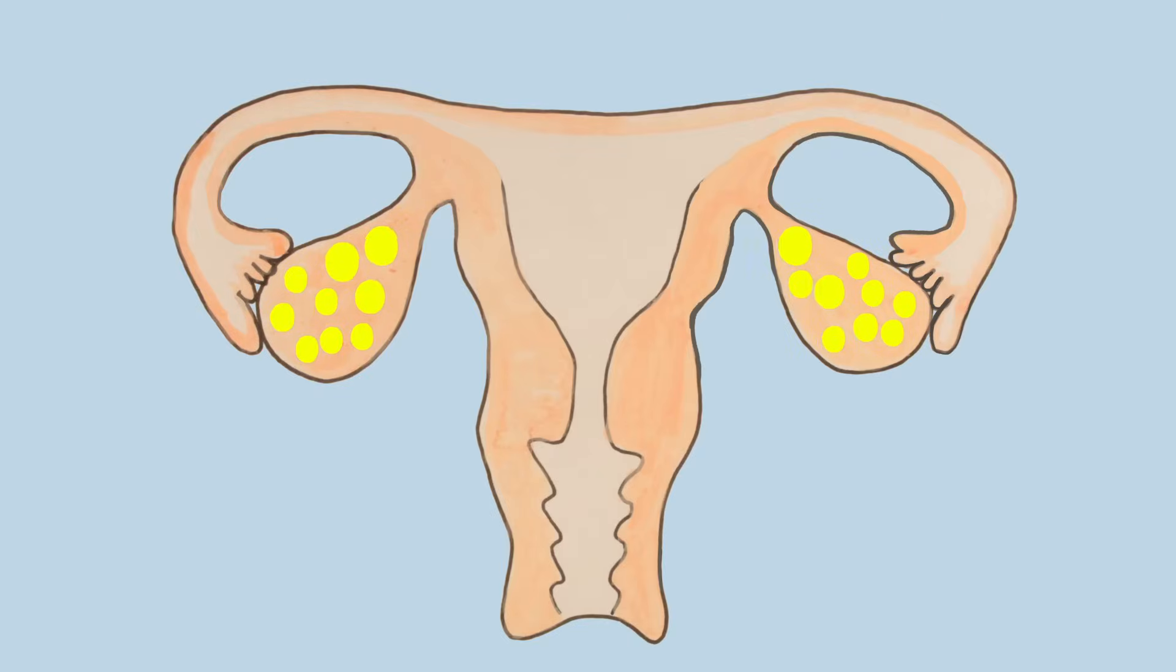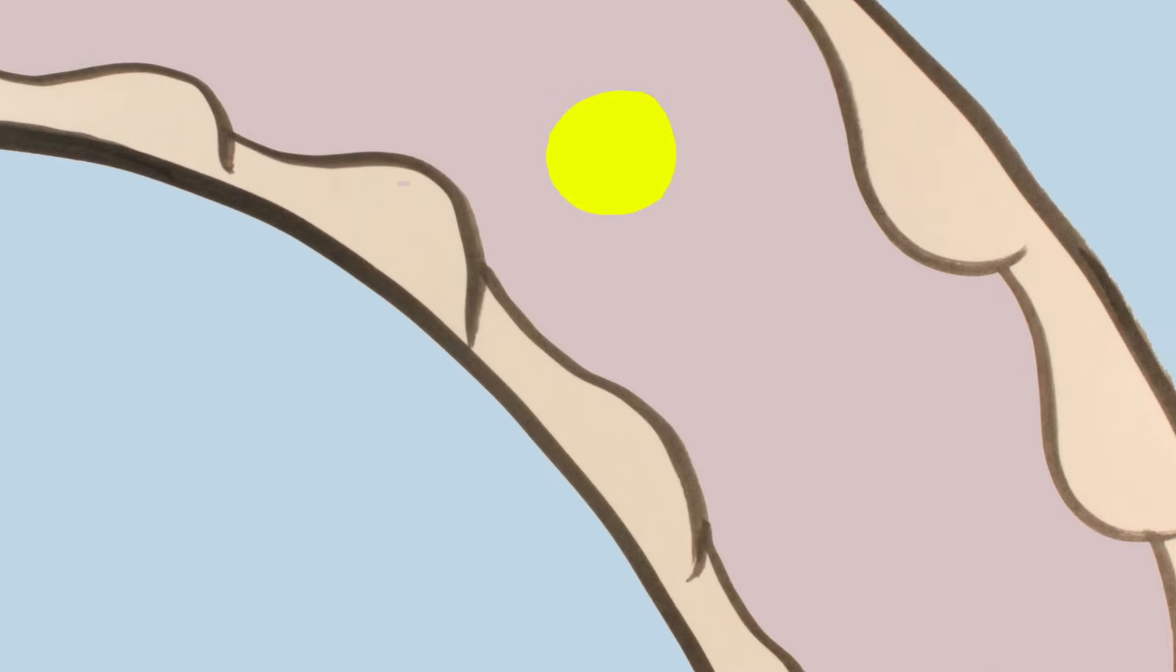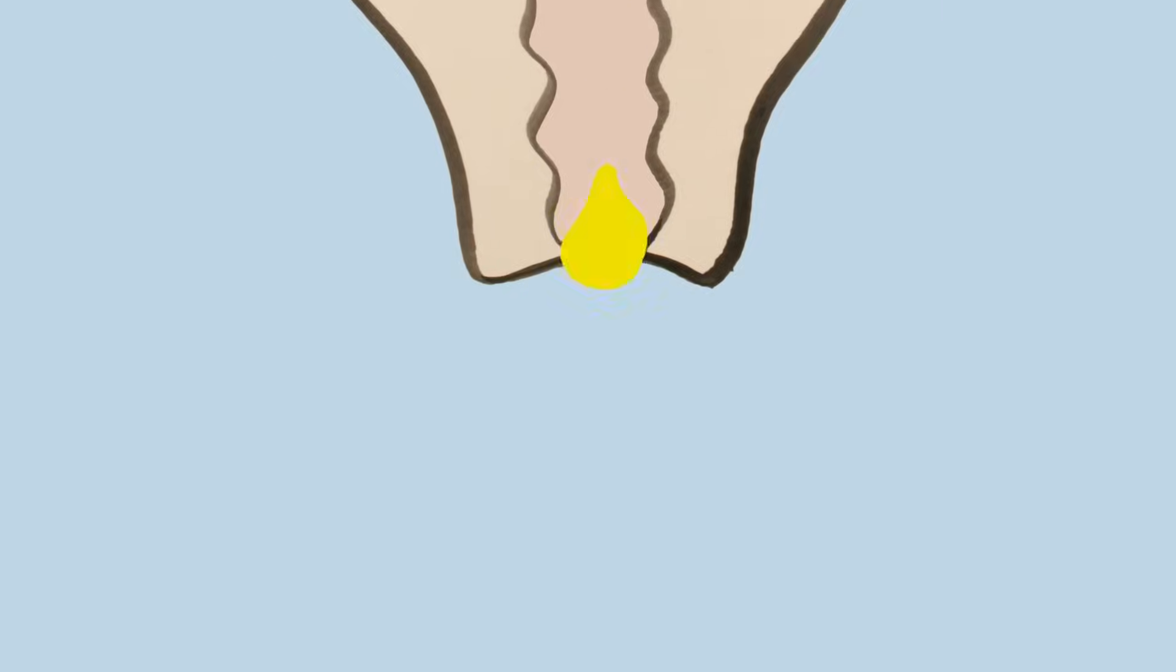About once a month, the ovaries release a teeny tiny egg into the fallopian tubes. If it's not fertilized after it's released, the egg is flushed out of the body during the period.